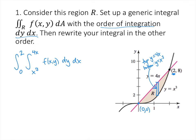Now if I want to slice the other direction, I'm interested in the left end and the right end of the slice rectangle. The left end is on the graph of y equals 4x, which is the same as x equals one-fourth y. And the right end — the upper end in the x direction — is on the graph of y equals x cubed, which is the same as x equals the cube root of y. So my inner integral would go from one-fourth y to the cube root of y of my generic function f(x, y), and that integral would be with respect to x.